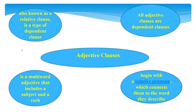An adjective clause, also known as a relative clause, is a type of dependent clause that works to describe a noun in a sentence. It functions as an adjective even though it is made up of a group of words instead of just one word. In the case of an adjective clause, all the words work together to modify the noun or pronoun. An adjective clause is a multi-word adjective that includes a subject and a verb.